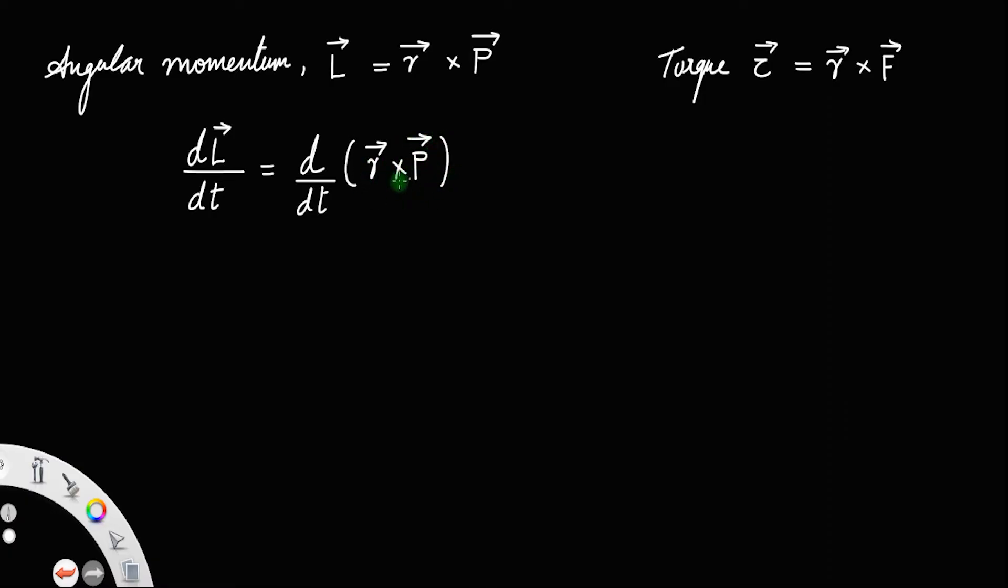Since there are two vectors here, you must use the product rule. That is derivative of first function dR by dt cross P, plus first function into derivative of second function R cross dP by dt. This actually is the product rule of derivatives.